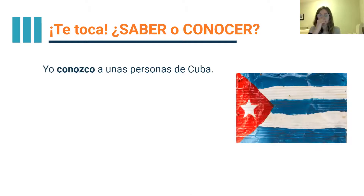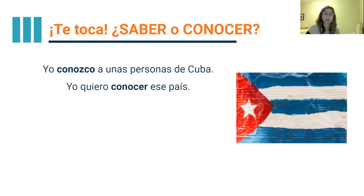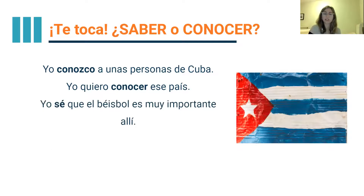Primero: yo conozco a unas personas de Cuba — I know some people from Cuba. We're going to say conocer for people. Yo quiero conocer ese país — to get to know the country, again we're using conocer. Yo sé que el béisbol es muy importante ahí — baseball is important there, that's a fact, so we use saber. And lastly: pero yo no sé jugar — but I don't know how to play — that's a skill, so again we'll use saber.